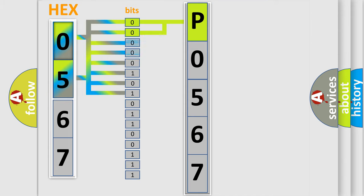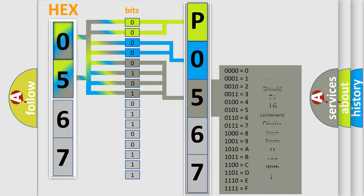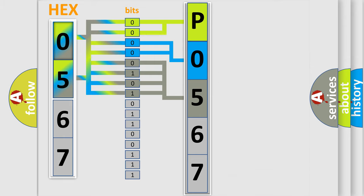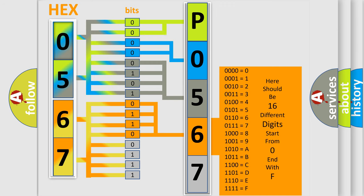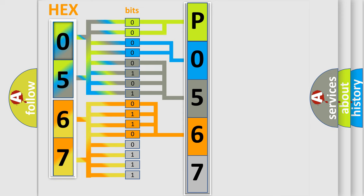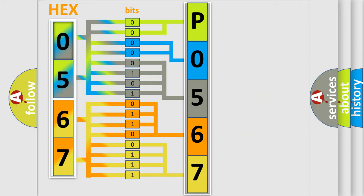The next two bits determine the second character. The last bits of the first byte define the third character of the code. The second byte is composed of a combination of eight bits. The first four bits determine the fourth character of the code, and the combination of the last four bits defines the fifth character. A single byte conceals 256 possible combinations. We now know in what way the diagnostic tool translates the received information into a more comprehensible format.